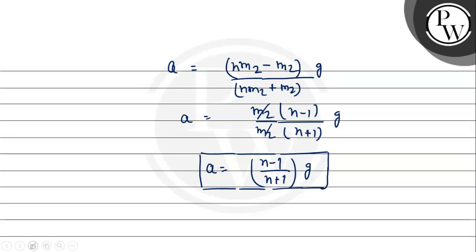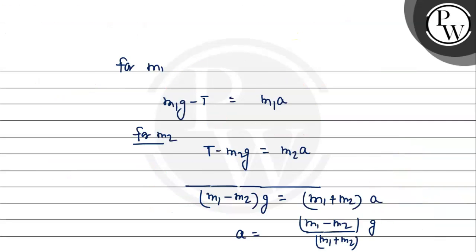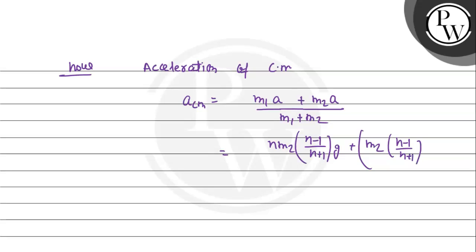Now calculating the acceleration of the center of mass: a_cm = (m1·a1 + m2·a2)/(m1 + m2). Here m1 has acceleration a downward and m2 has acceleration a upward (opposite direction). Substituting m1 = n·m2 and a = (n−1)/(n+1) × g, and noting the sign difference.